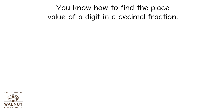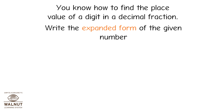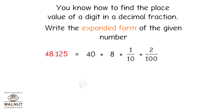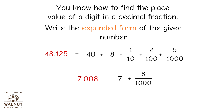You know how to find the place value of a digit in a decimal fraction. Write the expanded form of the given number. 48.125 is equal to 40 + 8 + 1/10 + 2/100 + 5/1000. 7.008 is equal to 7 + 8/1000.